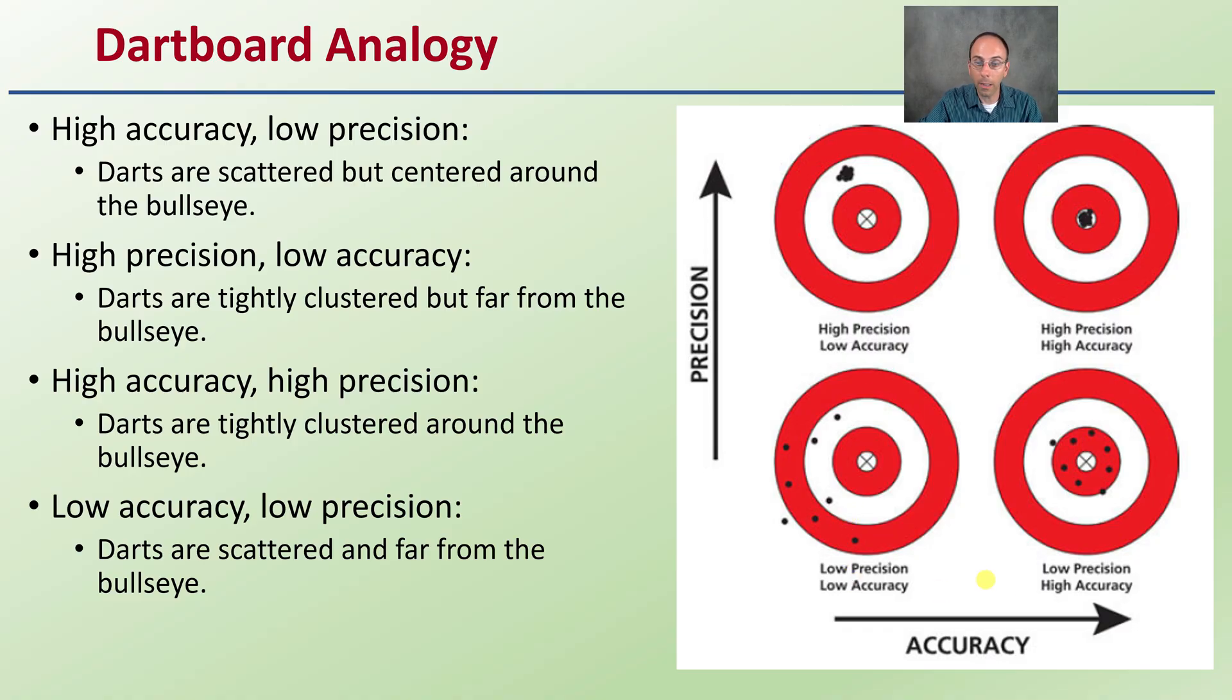If we increase our accuracy, so if we have high accuracy and low precision, the darts are scattered but centered around the bullseye in general. Then if we have high precision but low accuracy, the darts are tightly clustered but far from the actual bullseye.